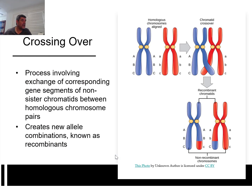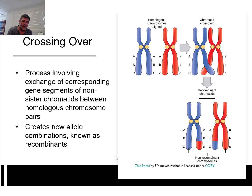Crossing over is the process that involves the exchange of corresponding gene segments of non-sister chromatids between the homologous chromosome pairs. This is the kind of terminology that we need to become more comfortable with. It is very important that you look at these regions to identify where crossing over occurs. When we talk about modelling the process of meiosis, we're specifically talking about drawing or building little models that show how this exchange occurs.